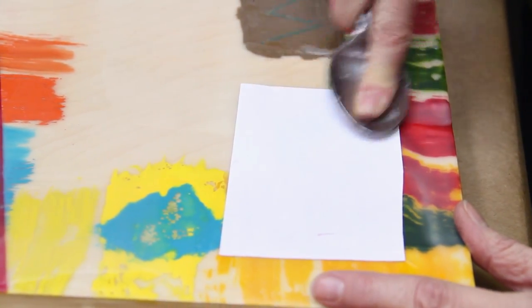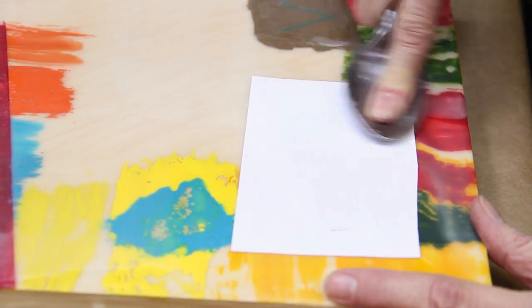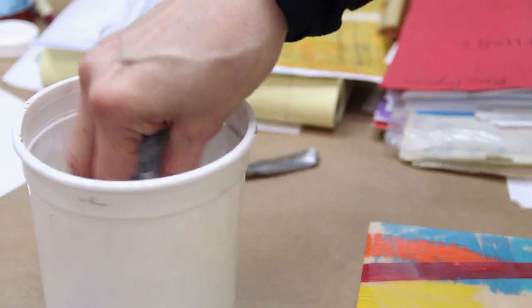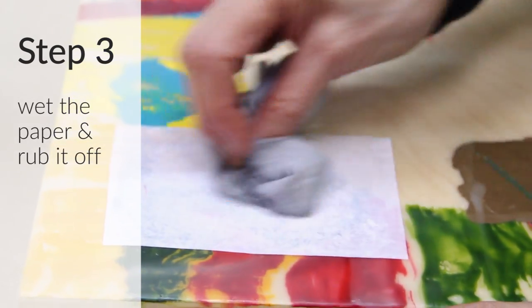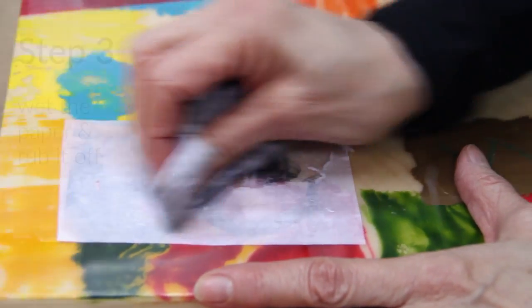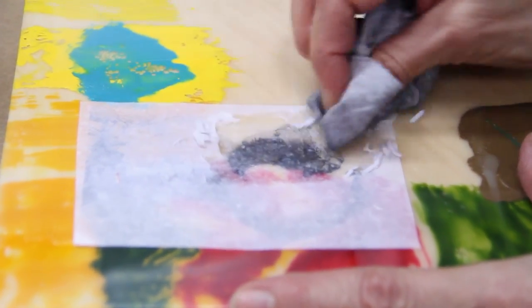I burnish it until I think I am done and then I do it a little bit more for good luck. Then I get it pretty wet because you are going to essentially rub the paper off the back. And then I start to rub and I kind of rub gently at first.